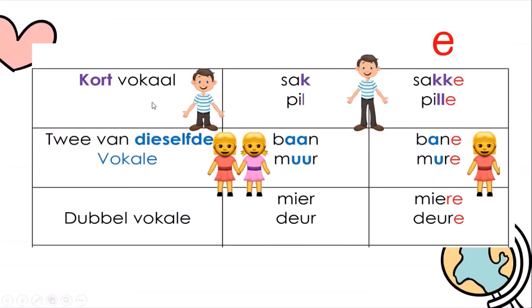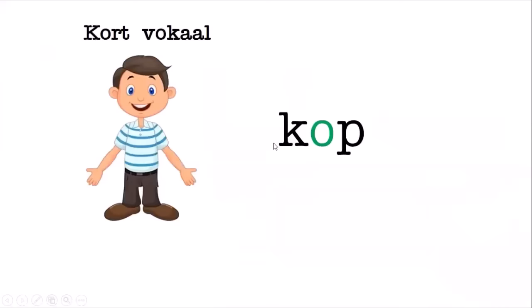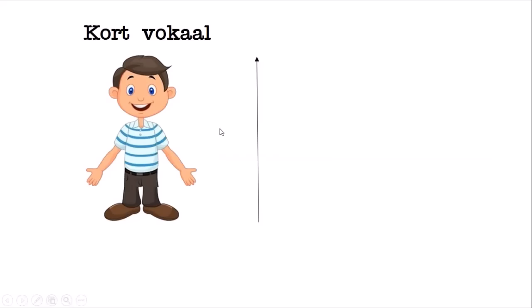Kom ons begin met 'n kort vokaal - a short vowel. Words like 'kop' and 'pil' - you can hear the vowel is short. It's not like 'maan' or 'kar' where it's long. So let's look at this little man - he is a kort vokaal. He is short and can't reach the cupboard or the table. We're going to have to make him taller by lengthening his legs - we're going to double them.